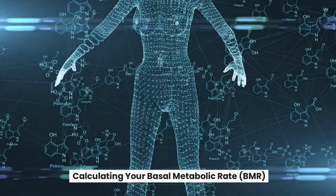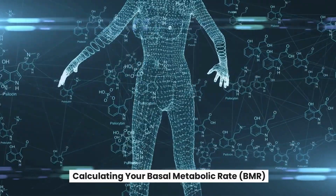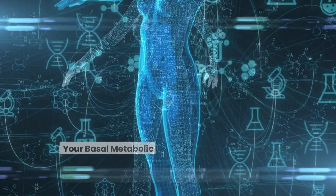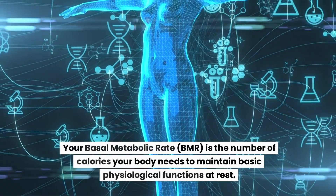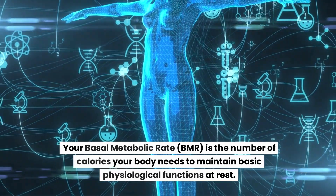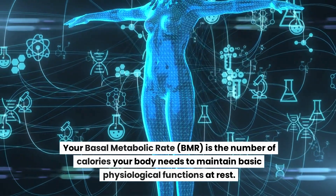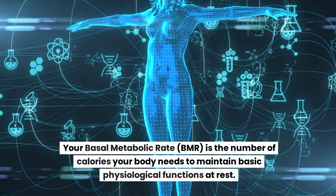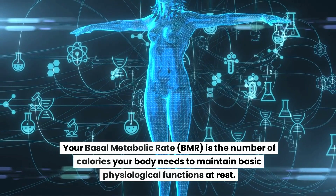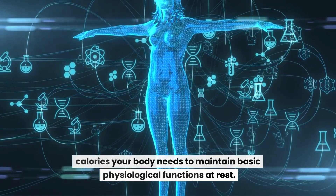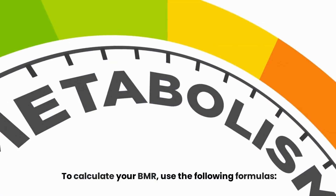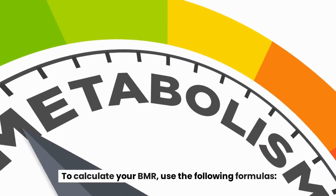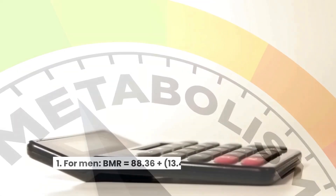Calculating your basal metabolic rate, BMR. Your basal metabolic rate, BMR, is the number of calories your body needs to maintain basic physiological functions at rest. To calculate your BMR, use the following formulas.